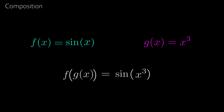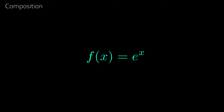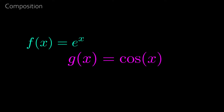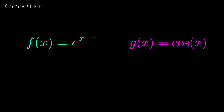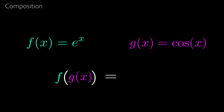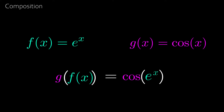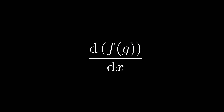Take f of x equal to e to the x, and g of x equal to cos x. Then f composed with g, or f of g of x, is equal to e to the cos x. Notice that the order matters, as g of f of x is equal to cos e to the x, which is significantly different. The question is: what is the derivative of a composition of functions? To do this, we need the chain rule.